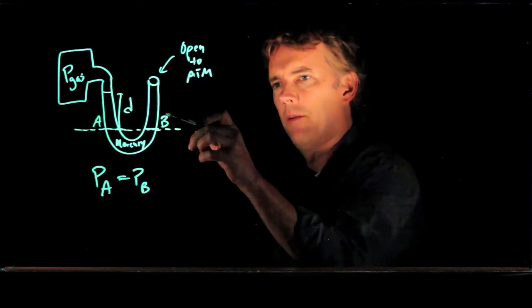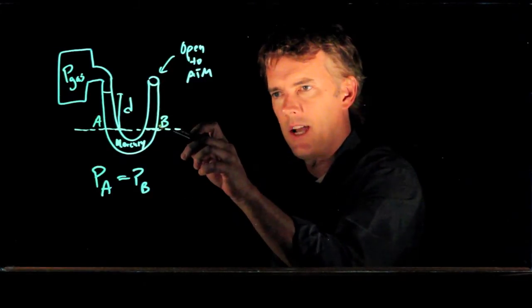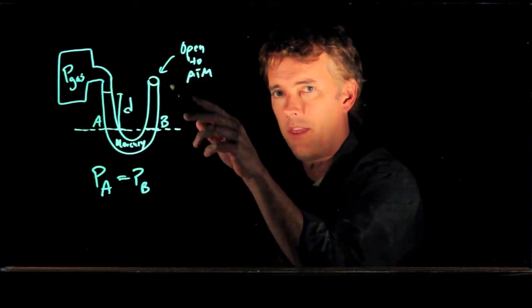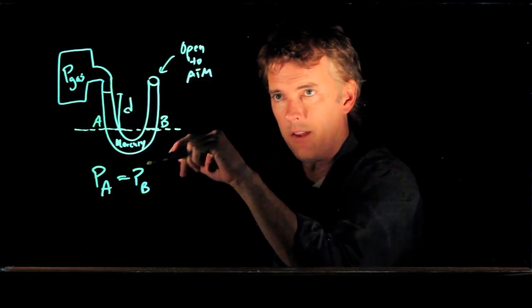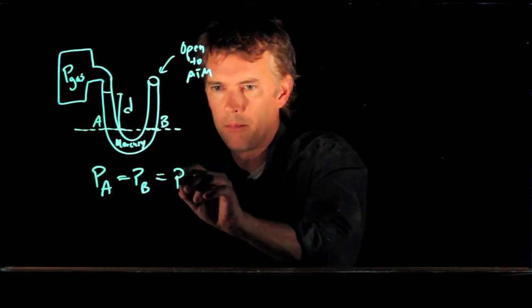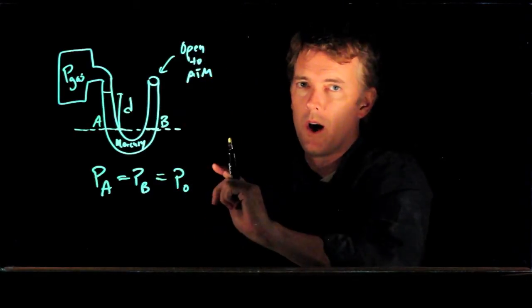But P sub B is at the top of the mercury on this right side. And so there's nothing above it but air that's open to the atmosphere. And so that pressure is P naught, which is one atmosphere.